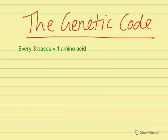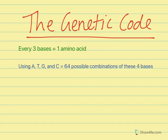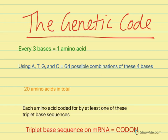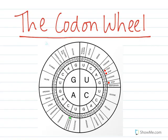Every three bases in the DNA base sequence codes for one amino acid. Using the bases A, T, G, and C, there are 64 possible three-base combinations. Remember that when mRNA is transcribed from DNA, thymine is replaced with uracil. With 20 amino acids in total, each amino acid is coded for by at least one of these triplet base sequences. Each three-base sequence on the mRNA strand is called a codon, and each codon codes for a particular amino acid.